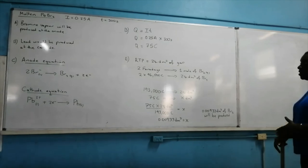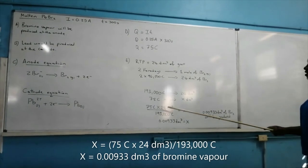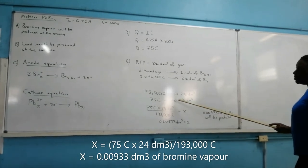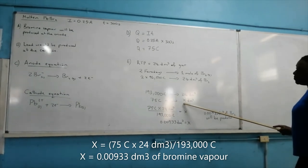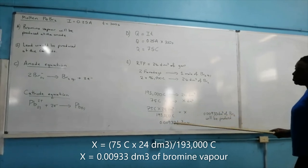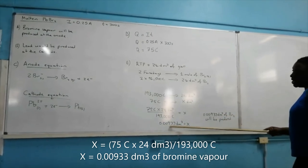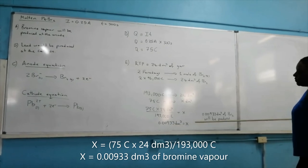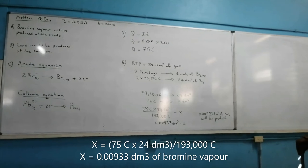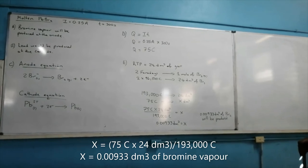1 mole of bromine vapor would occupy a volume of 24 dm³. So if 75 coulombs flows through the circuit, by cross multiplication we get 0.00933 dm³ of bromine vapor being produced. That's how we approach these types of questions.